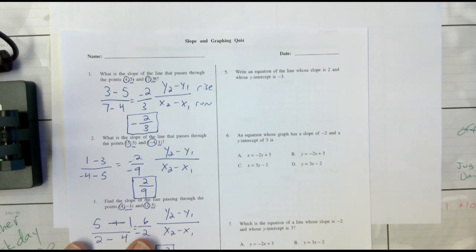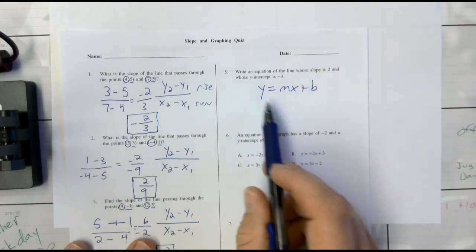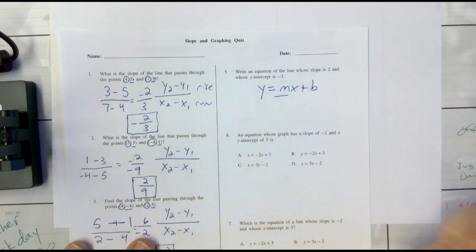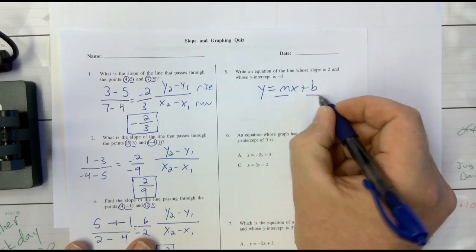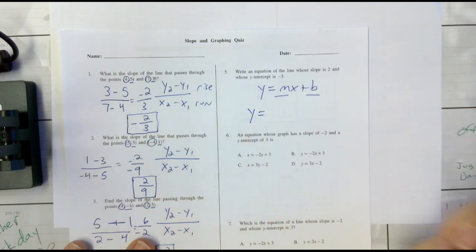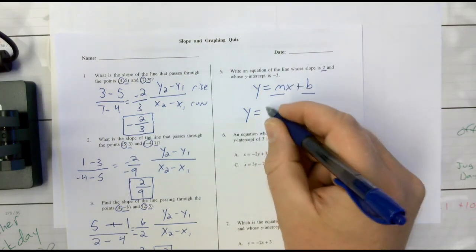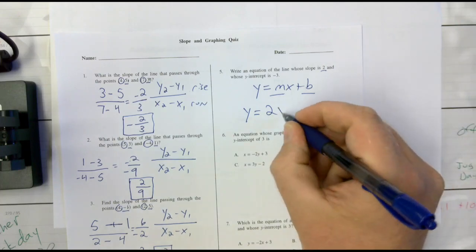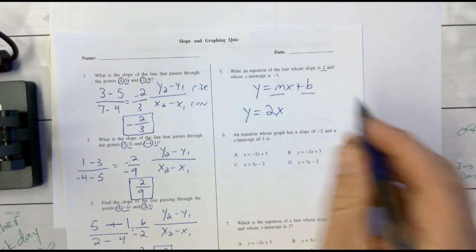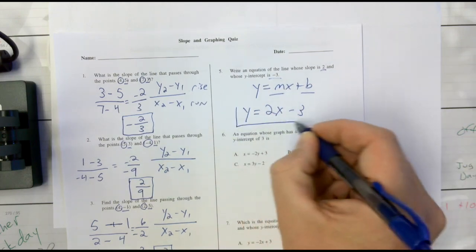Write an equation of a line whose slope is two and y-intercept is negative three. These are the easy ones. In general form, y equals mx plus b — m is always my slope, b is always my y-intercept. I'm literally just building an equation. The y never changes. My slope is two, my y-intercept is negative three. So it's y equals two x minus three.